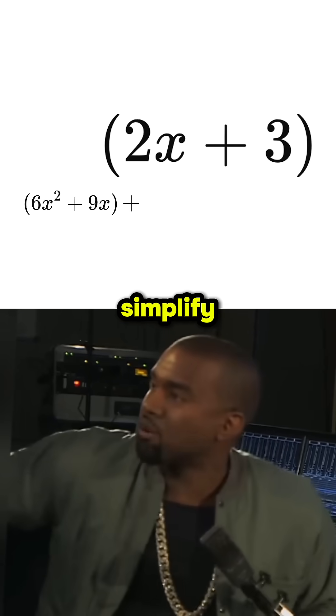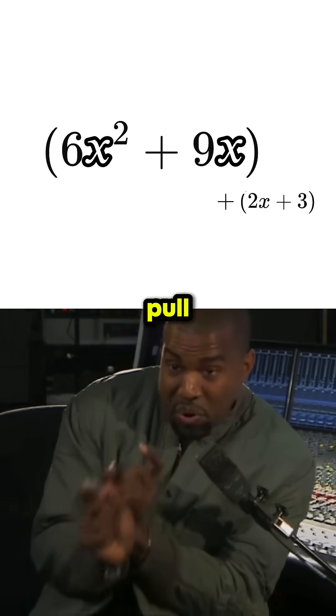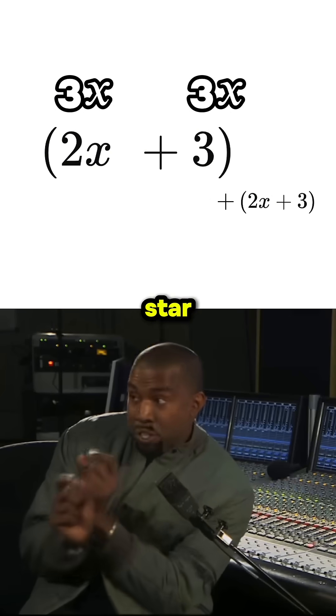Ain't nothing else we can do to simplify 2x plus 3, but these two terms both have an x in them which we can pull out. And we can also pull a 3 out from the 6 and the 9. Right, yay? Gold star for you, Sydney.